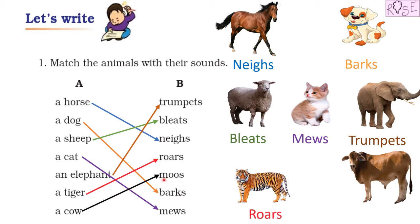Last is a cow. What does a cow do? Cow moos. Yes, and here I have written moos under the picture of the cow. So we did the activity completely, and all the answers are correct.